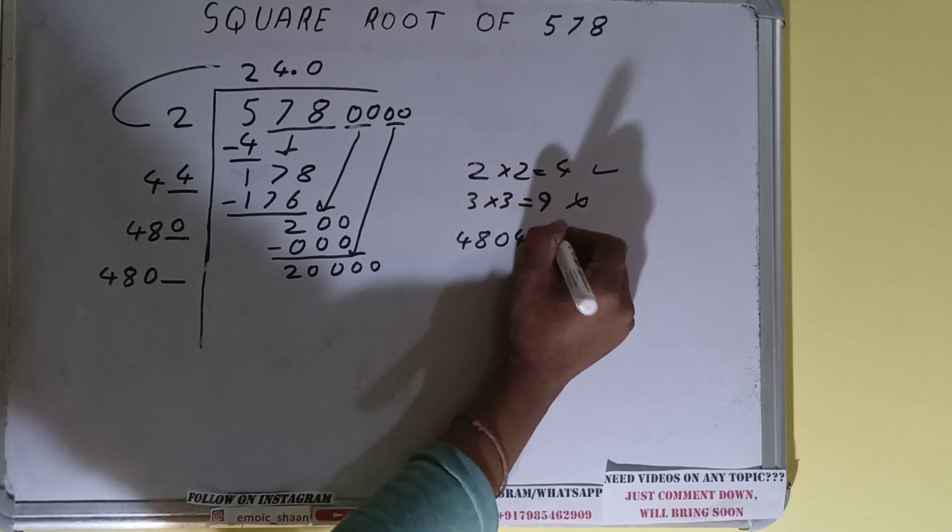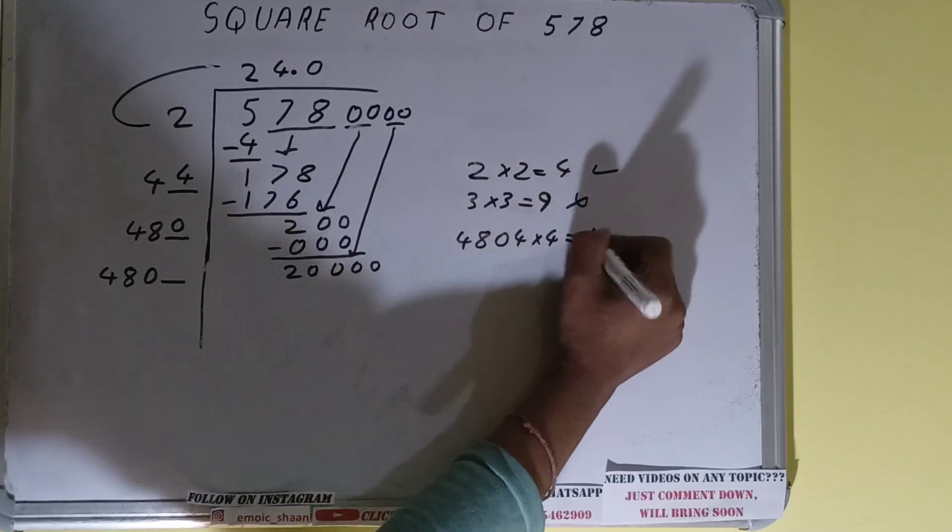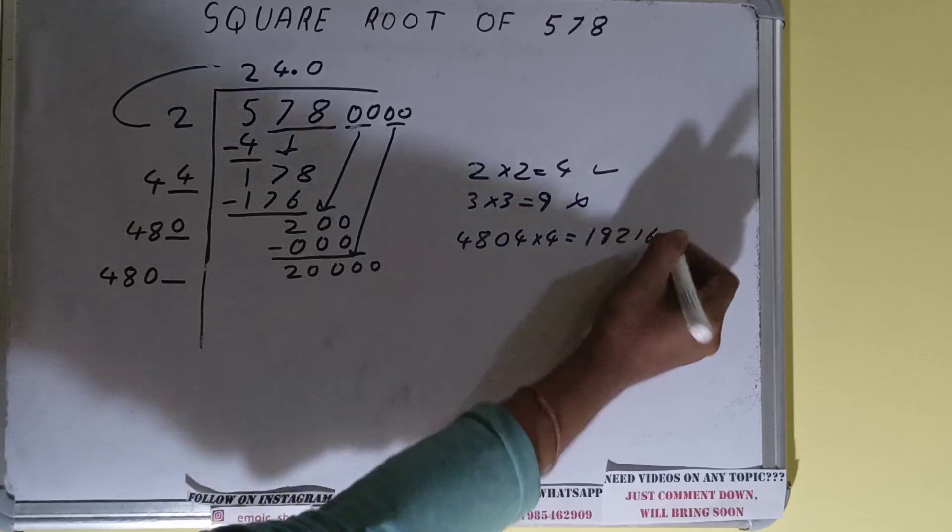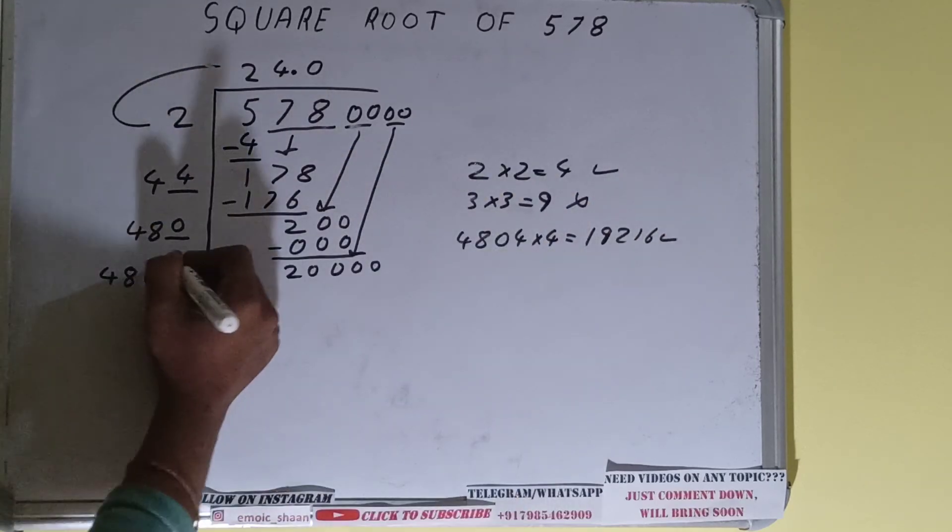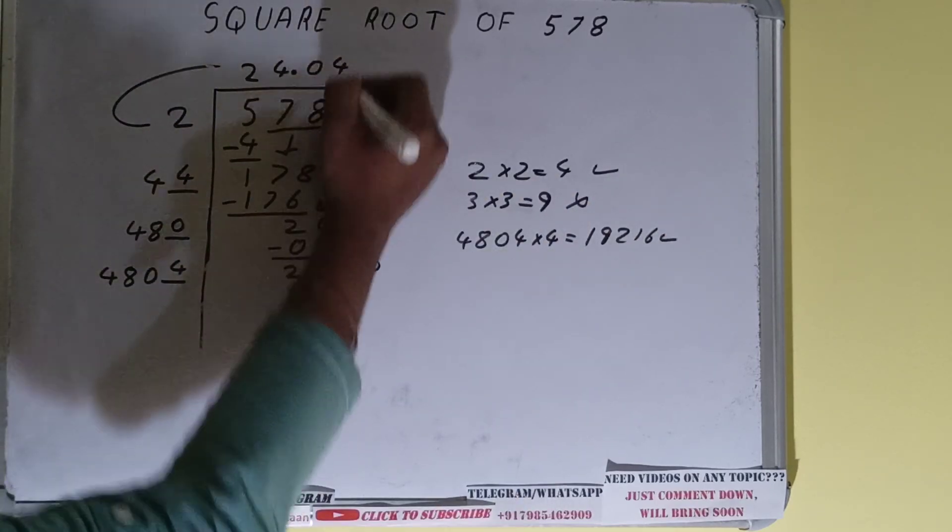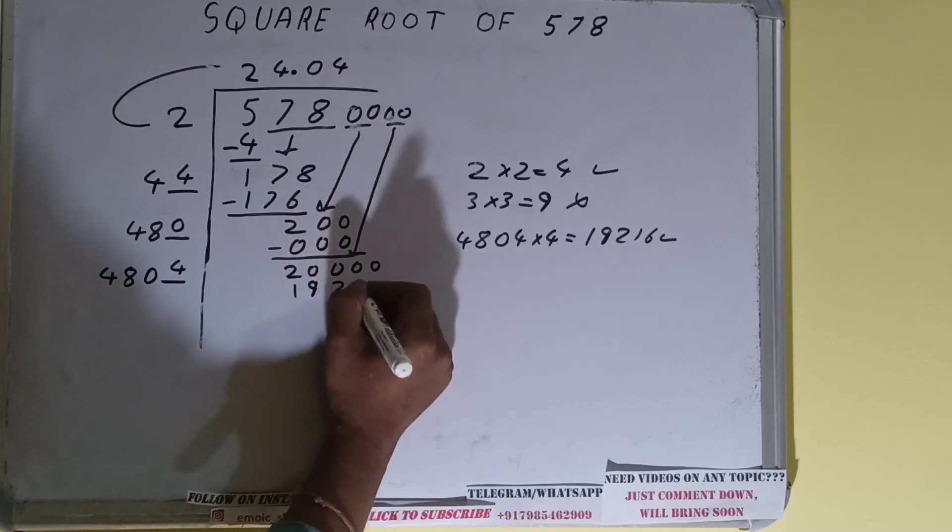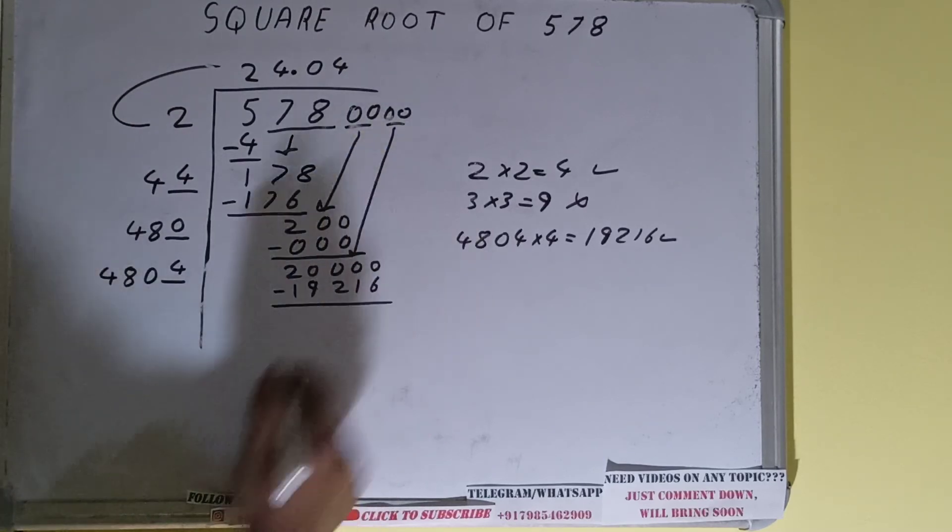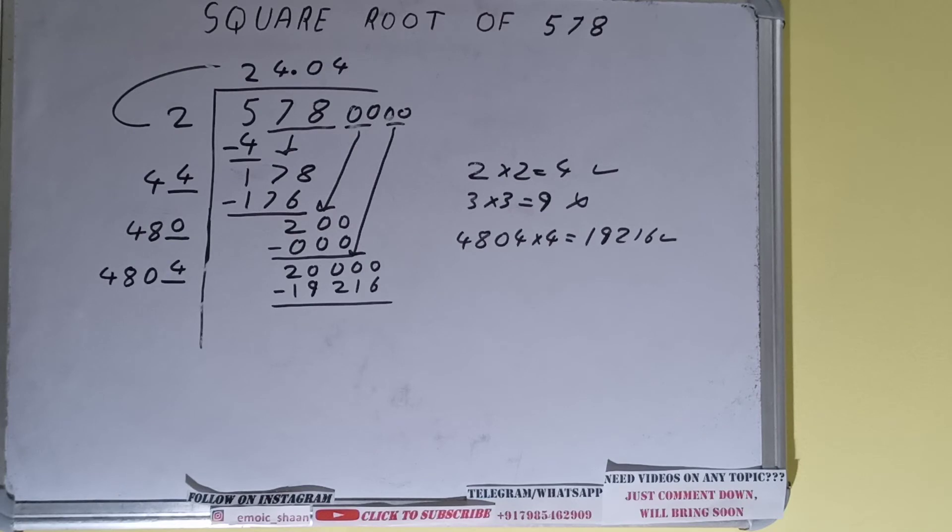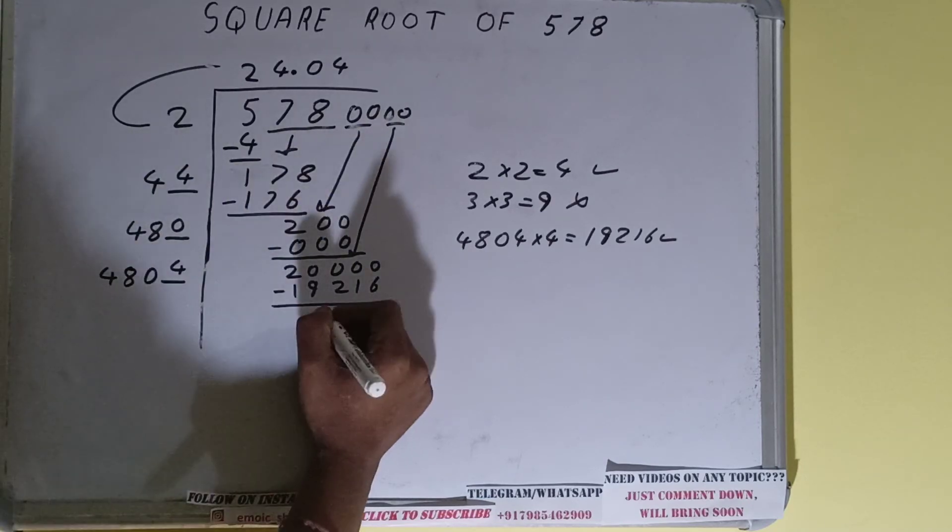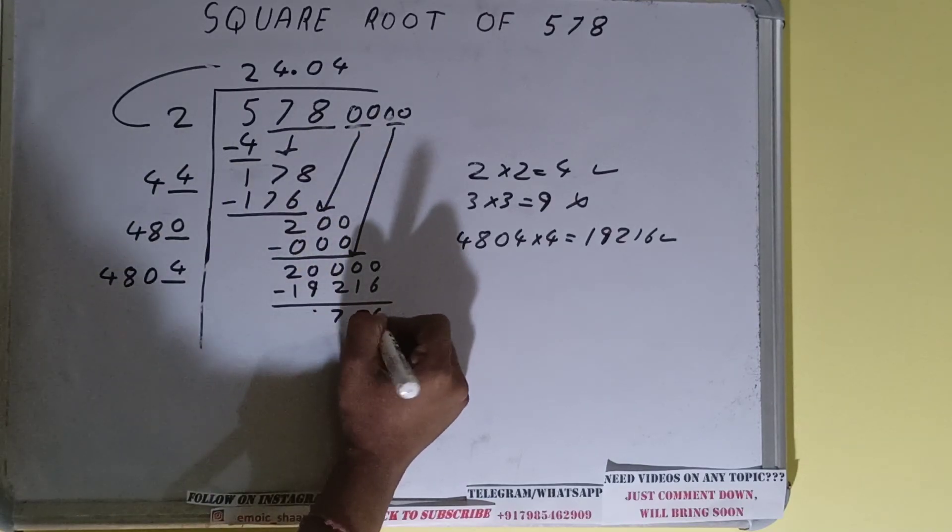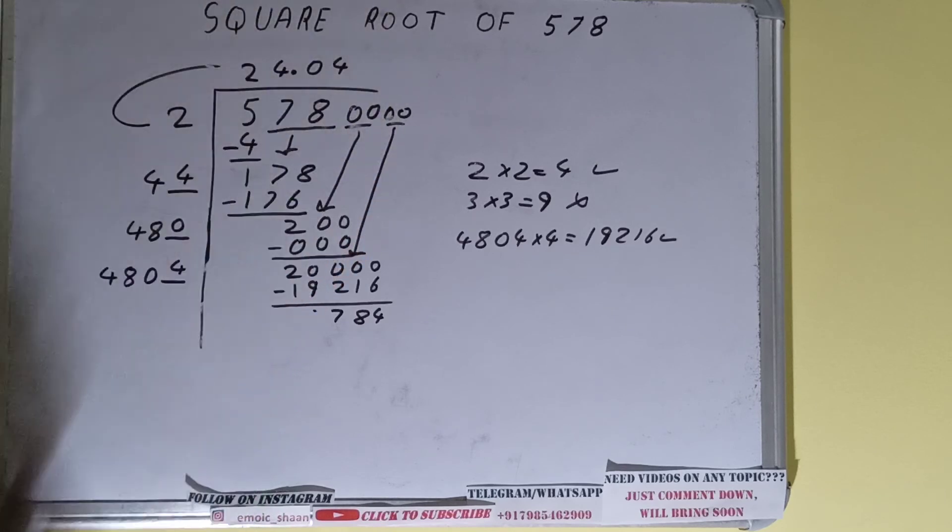So 4804 into 4 we can try. It will be 19,216. That is good to take. So 4 here and 4 here will give 19,216. Subtract it and 784 will be left. Now 4804 into 4, so add both. So 4804 plus 4 will be 4808 and 1 digit extra.